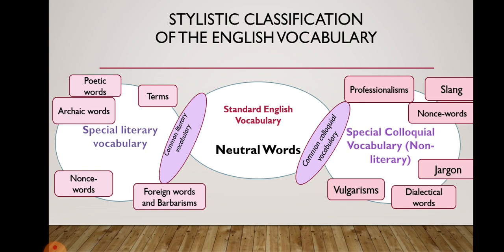Neutral words and some subgroups called common literary vocabulary and common colloquial vocabulary compose the standard English vocabulary. In the previous lectures, we discussed special literary vocabulary, and today we will consider in more detail special colloquial vocabulary, which includes groups such as slang, jargon, dialectal words, professionalisms, and vulgarisms.